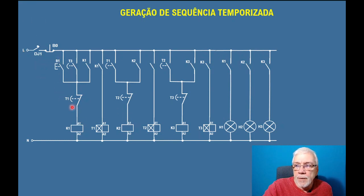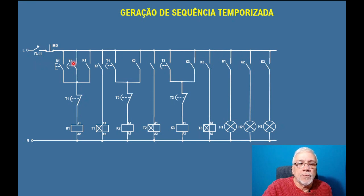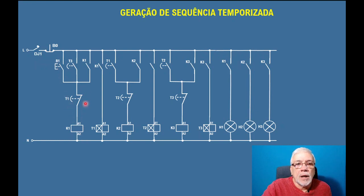Aqui nós vamos ver que nós temos três estruturas. Todas essas estruturas são bem parecidas. Elas têm um selo e tem alguém aqui em série com o ramo principal para desligar a minha contactora. A minha primeira contactora K1 que foi ligada — foi dado um start inicial aqui nesse botão, que eu vou chamar de B1. Uma vez B1 sendo acionado, a contactora vai entrar e vai se selar através do contato de selo. E assim que ela entrar, ela vai também fazer o acionamento do temporizador.